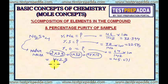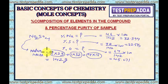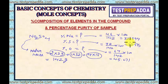The conclusion is: the percentage of sodium, sulfur, and oxygen in Na₂SO₄ should always be 32.394%, 22.535%, and 45.071% respectively. If the percentages change, it means the Na₂SO₄ is not pure. If a Na₂SO₄ sample is given and the percentage of sodium is less than 32.394%, it means the sample is not 100% pure.